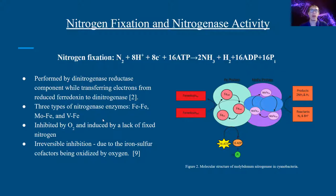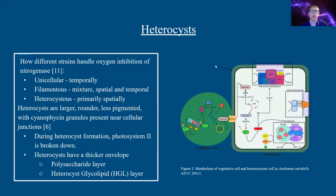Due to the high oxidizing ability of the iron-sulfur cofactors within nitrogenase, it is easily inhibited by oxygen. This is why it is only found in heterocysts, specialized cells that lack photosystem II and the oxygen-evolving complex.